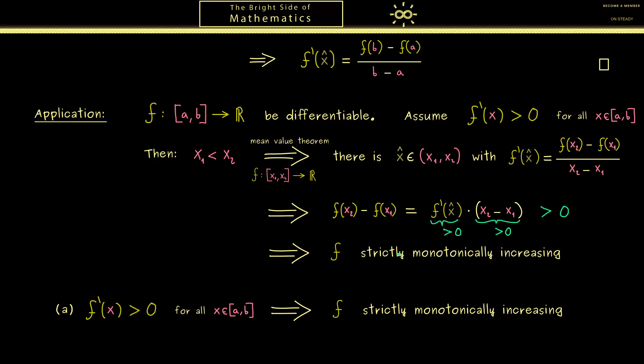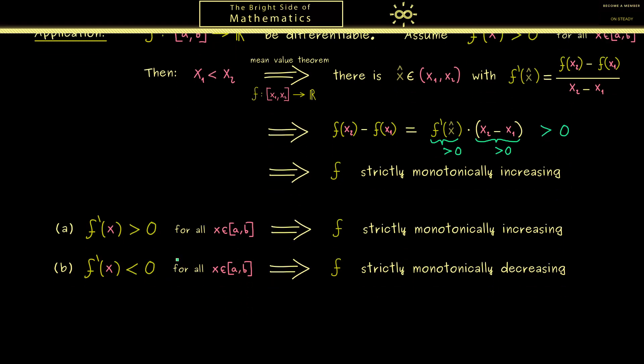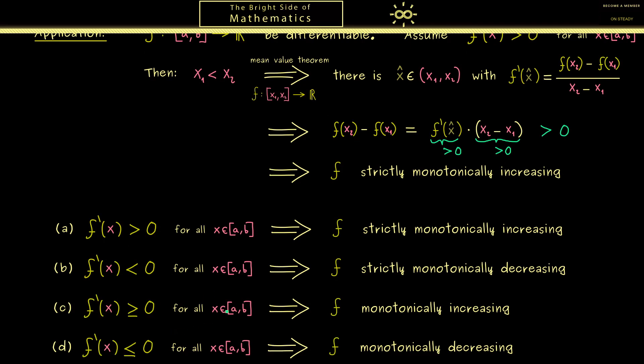And of course with a similar proof we can also look at cases with a negative derivative. This case might not surprise you. We simply get out that the function is strictly monotonically decreasing then. In addition we can also look at the cases where we don't have the strict inequality. This means if you look at the proof we will also lose the strict inequality here. Otherwise the proof works exactly the same. However since we lose the strict inequality we just have functions that are monotonically increasing or decreasing. With this we now have a common application for derivatives when we want to analyze functions. And of course this will come in handy a lot later. Therefore I really hope I see you in later videos. Have a nice day and bye!